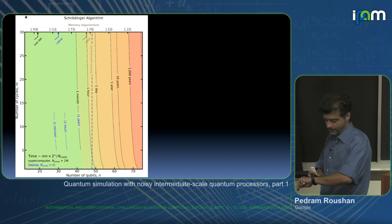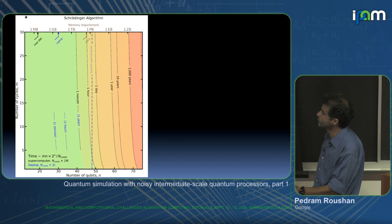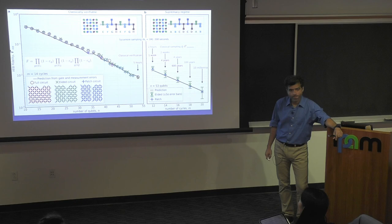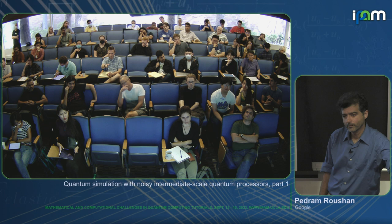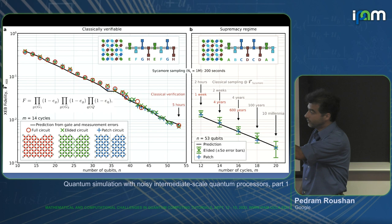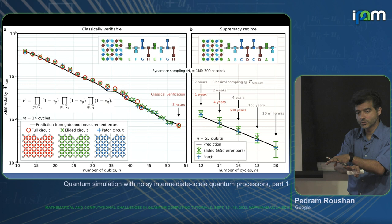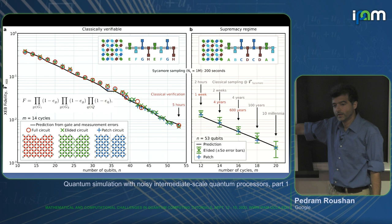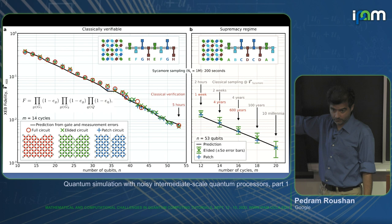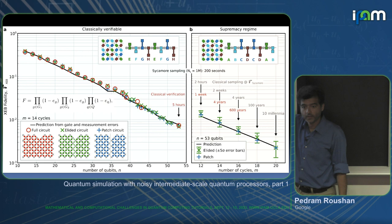Let's talk about the time associated with computing these. The number of qubits is on one axis and depth on the other, with color showing how long it takes. If you have a laptop with 30 GB, you can simulate 30 qubits in one minute with two cores. With a supercomputer you can go up to 40 qubits in one minute at reasonable depth — roughly one minute for one million cores. However, storing the wave function takes enormous memory, which is the key bottleneck.